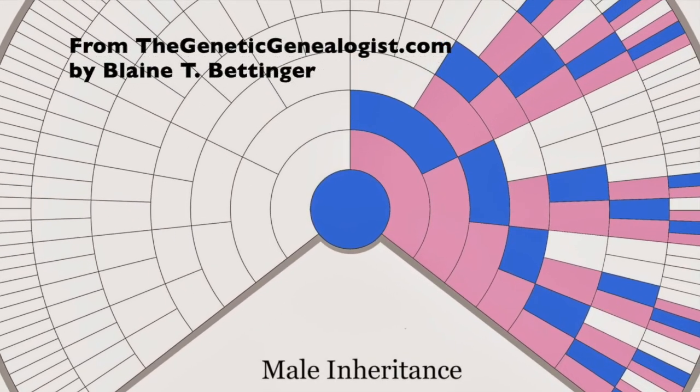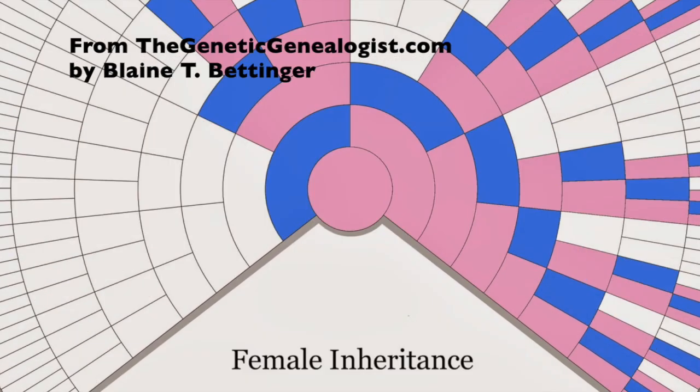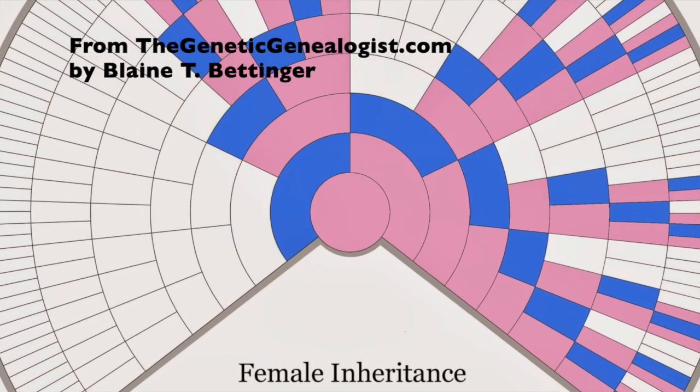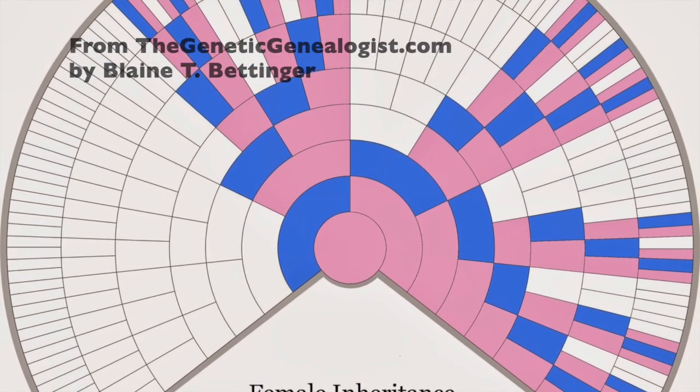A really nice way of using the X chromosome to pinpoint your relations is using it with a fan chart. By using a fan chart, you can color where you know your X chromosome comes from. So when you have a significant match with someone on your X chromosome, you can just look at that chart and instantly know the possible relations that you have with that person.